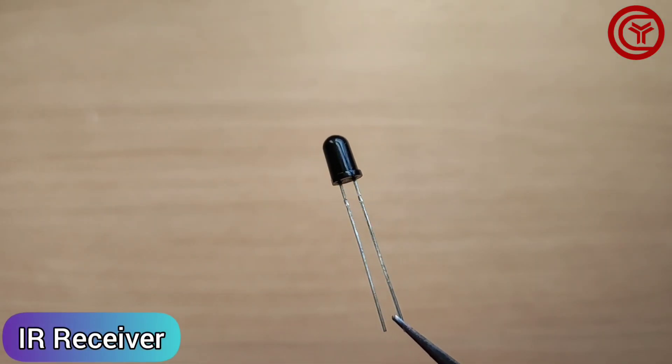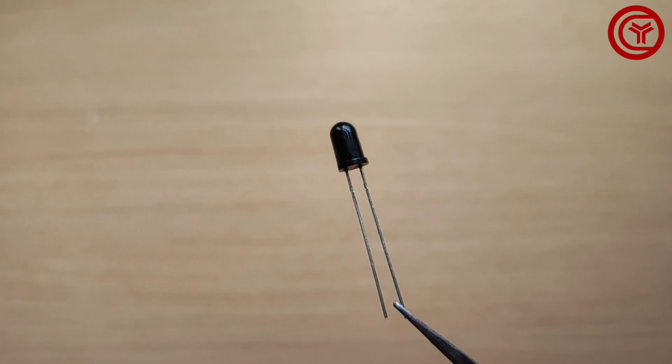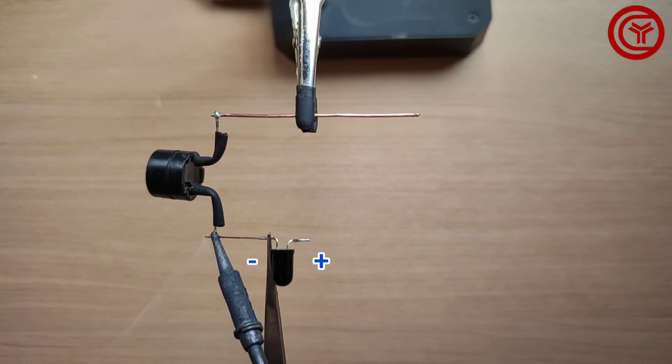Take an IR receiver LED and solder the IR negative with the buzzer positive.